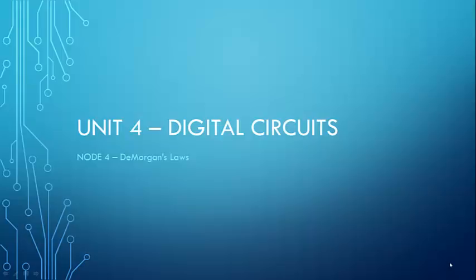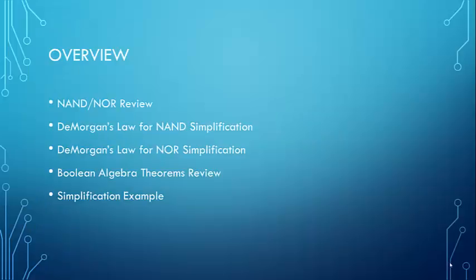Hi everyone. This last node of Unit 4 focuses on De Morgan's Laws. We're going to quickly go back over the NAND and NOR logic gates, and then take a closer look at each of those gates in terms of De Morgan's Law for NAND simplification and De Morgan's Law for NOR simplification. After that, we'll do a quick Boolean algebra theorems review from Unit 3, and then go through a simplification example using those theorems and our new NAND and NOR simplification laws.